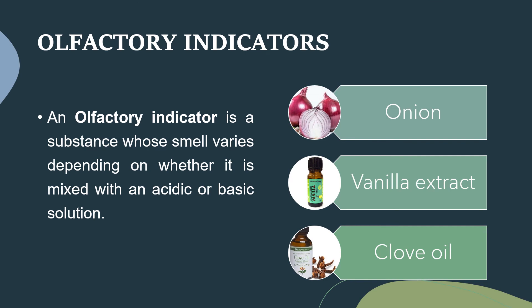What are olfactory indicators? An olfactory indicator is a substance whose smell varies depending on whether it is mixed with an acidic or basic solution. Onion, vanilla extract and clove oil are some examples of olfactory indicators.